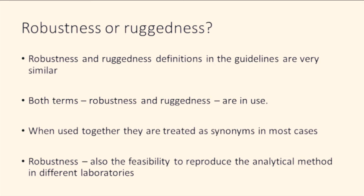The previously introduced definition implies changes made to the method within the same laboratory. However, robustness can also be described as the feasibility to reproduce the analytical method in different laboratories under different circumstances without the occurrence of unexpected differences in obtained results.